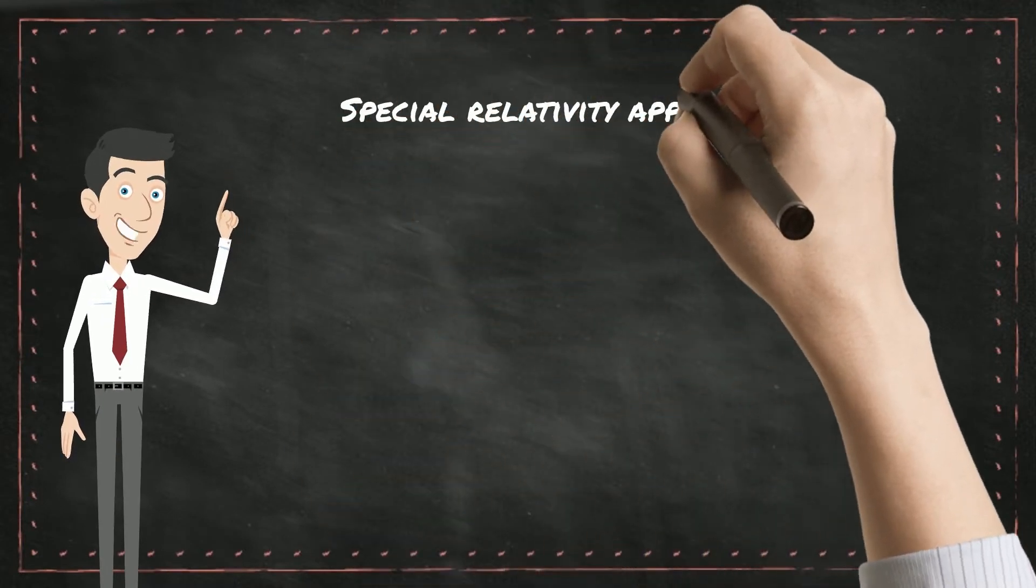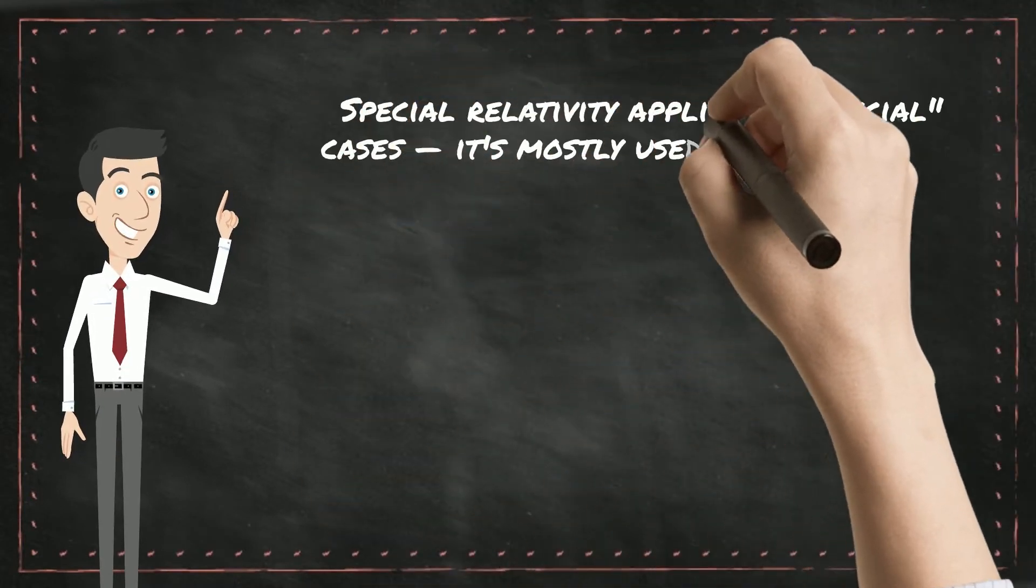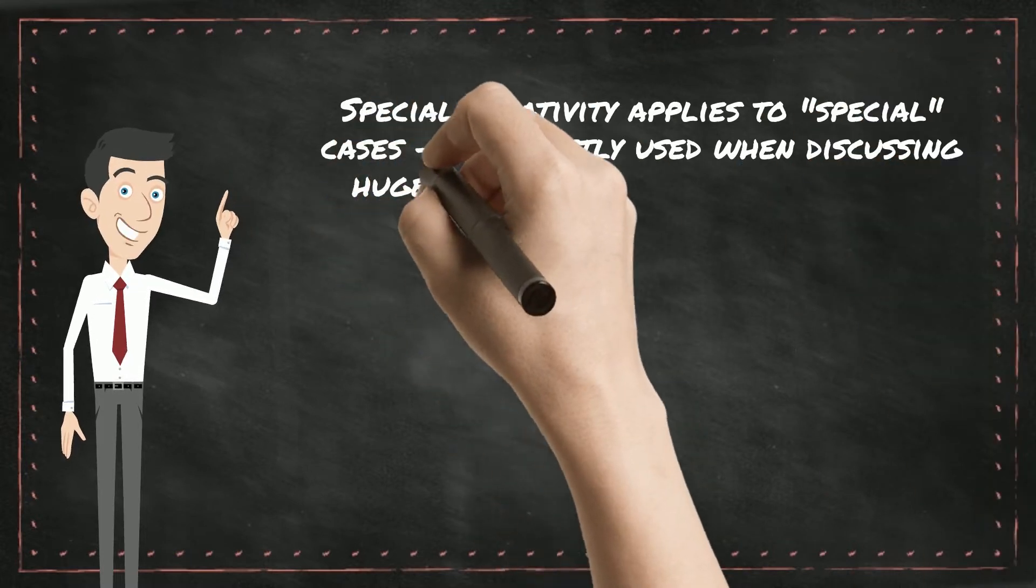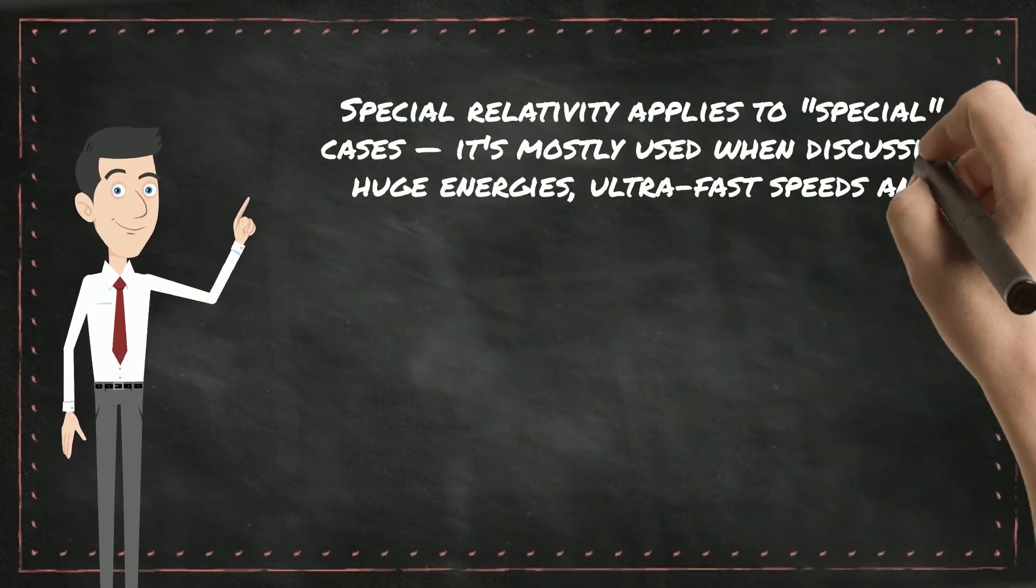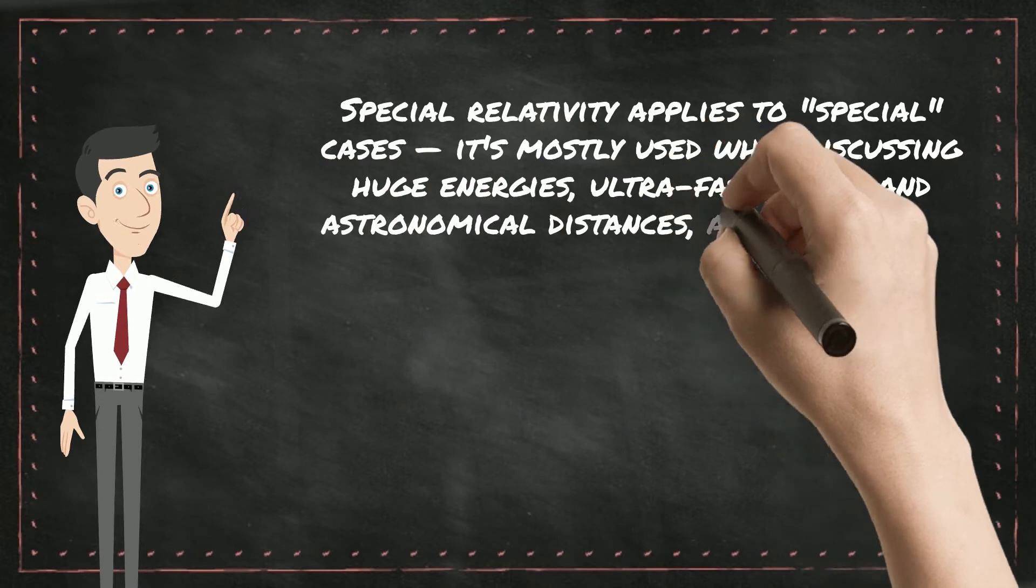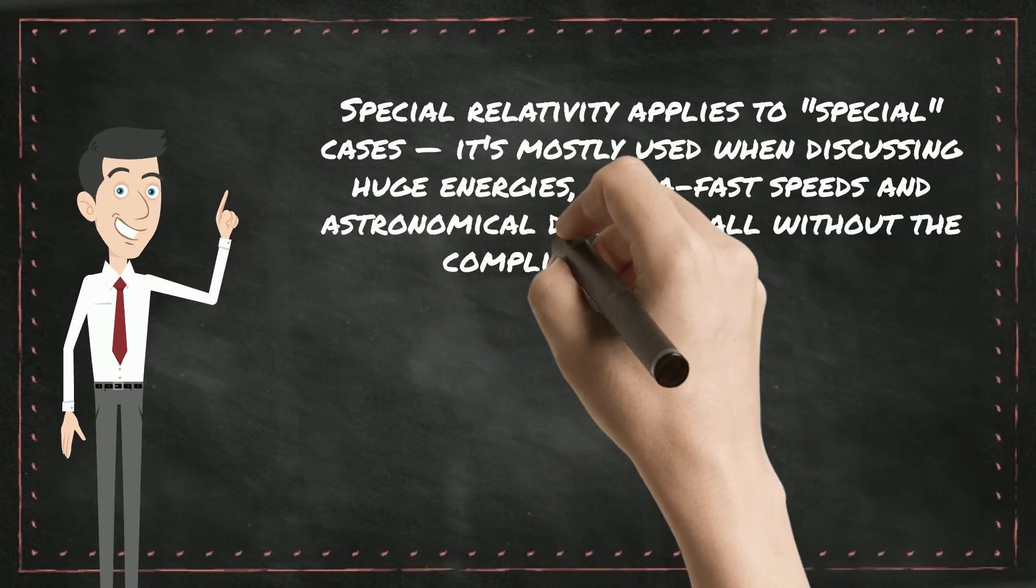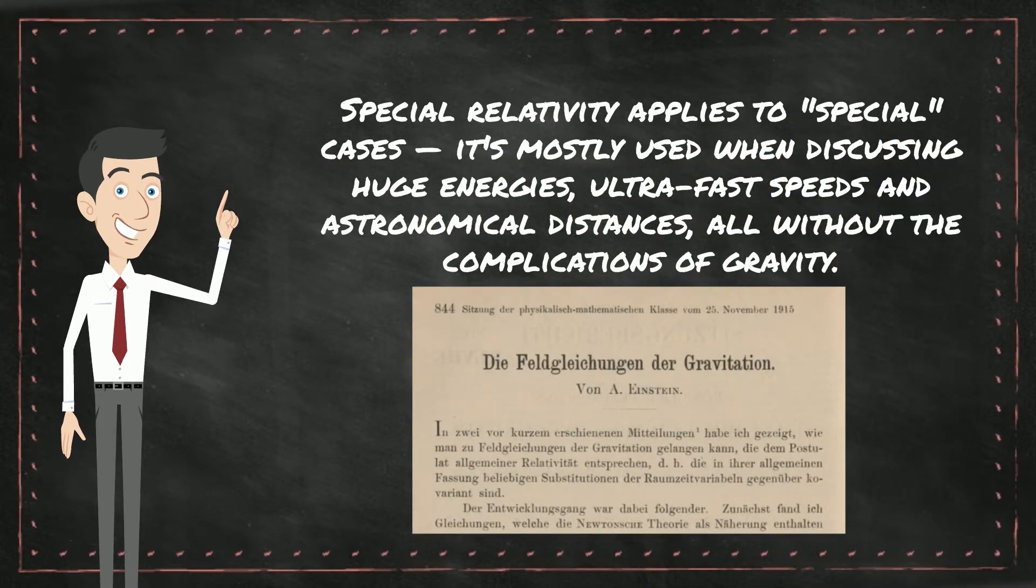Special Relativity applies to special cases. It's mostly used when discussing huge energies, ultra-fast speeds and astronomical distances, all without the complications of gravity. Einstein officially added gravity to his theories in 1915 with the publication of his paper on general relativity.